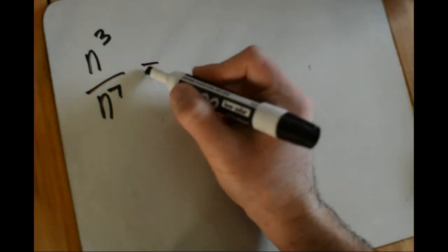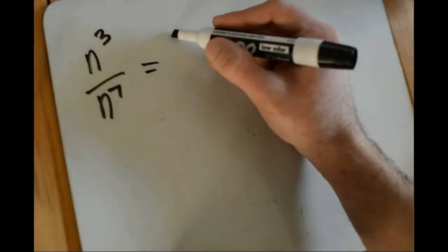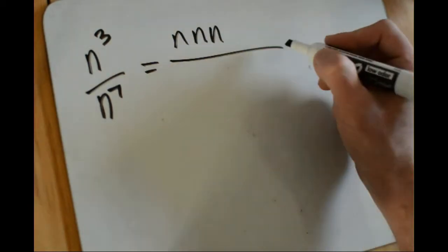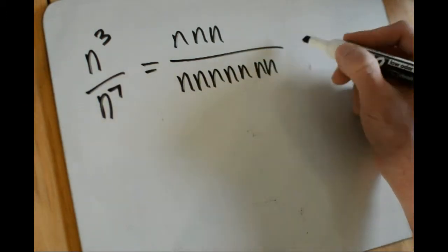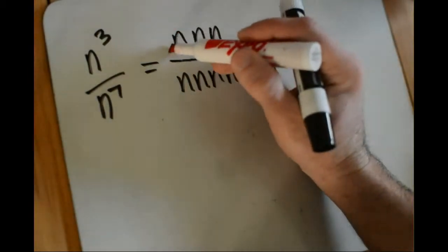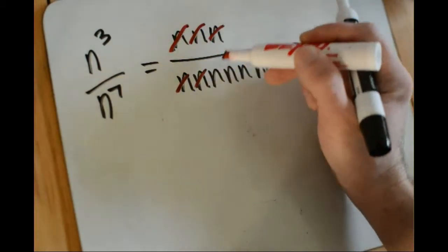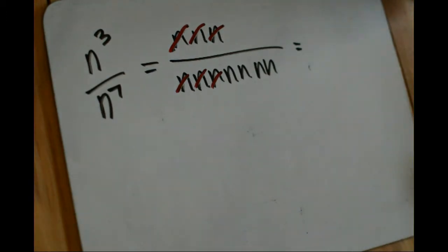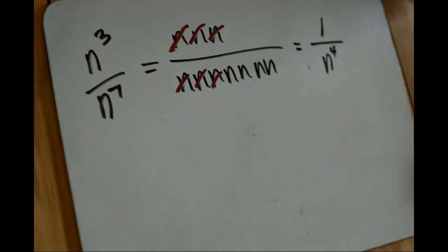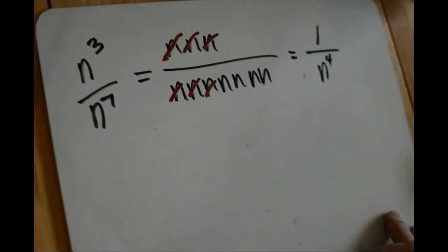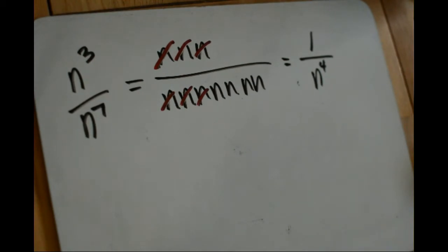Now let's take a look at some negative exponents. Here I have the expression n to the third divided by n to the seventh, and I want to simplify this by expanding it as well. In the numerator I have three factors of n, and in the denominator I have seven factors of n. Every time we have a pair of the same factor, those divide out to be one. What we have is four factors of n left over in the denominator, so n to the fourth on the bottom and one on top. So n to the third divided by n to the seventh simplifies to one over n to the fourth.